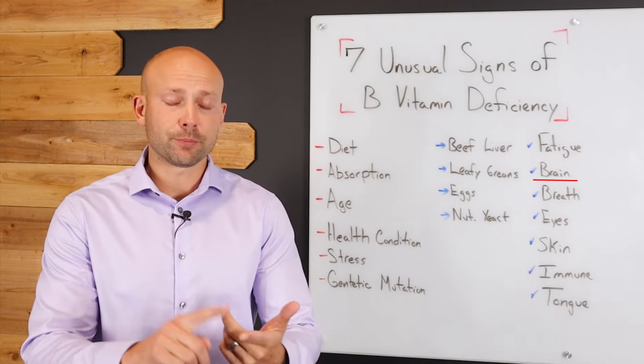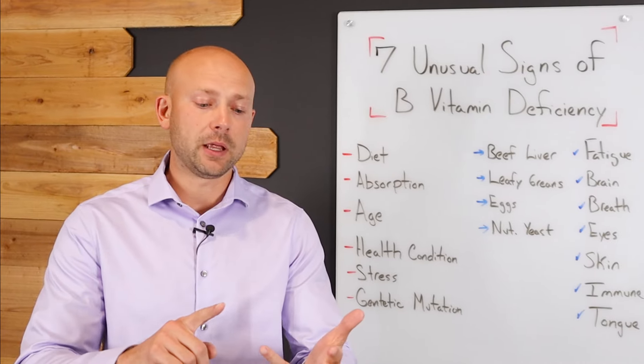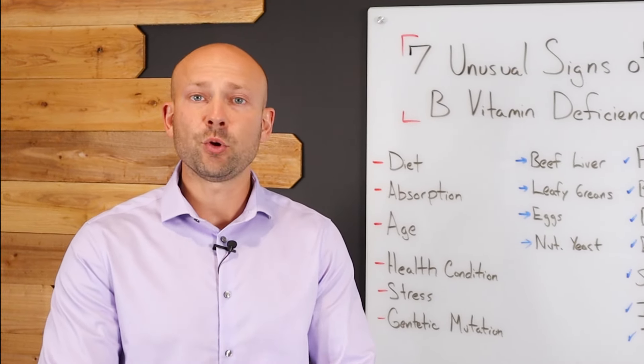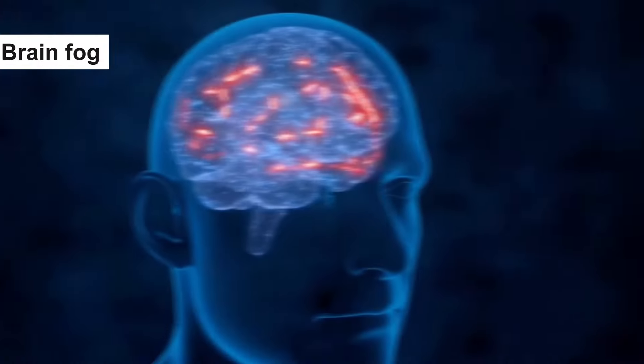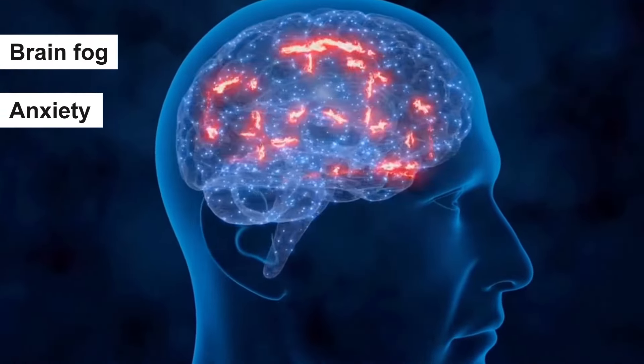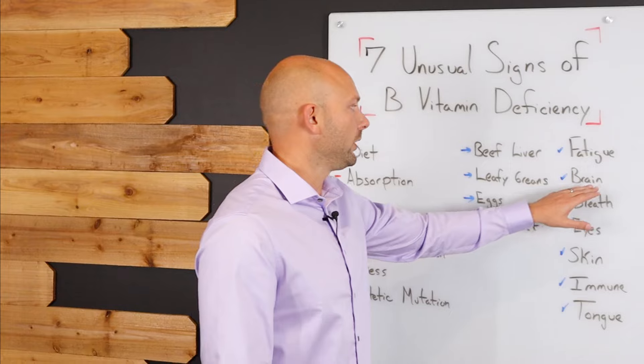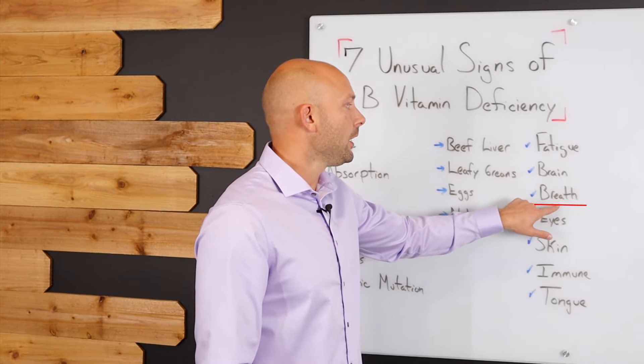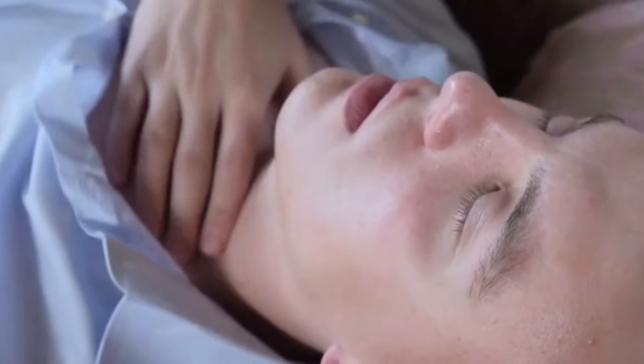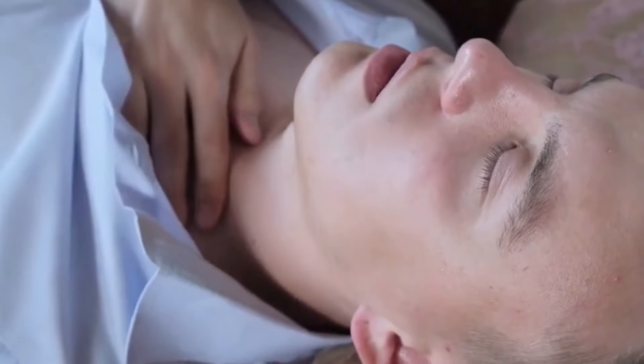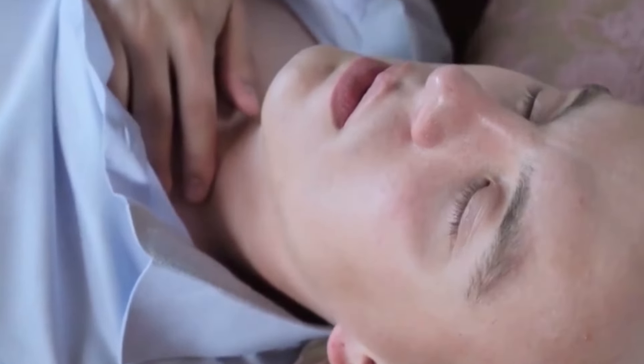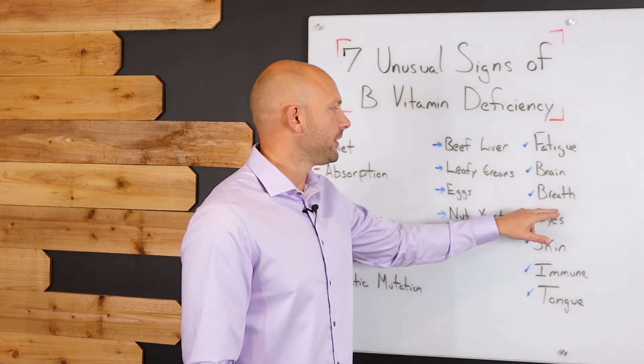Brain issues. This can be depression, this can be anxiety, this can be memory issues. A lot of people who have B vitamin deficiencies can have dementia-like symptoms, just brain fog, anxiety, irritability, you name it. So really going to have a big impact on your brain. Breathlessness. So if you have shortness of breath or you just feel like you can't catch a breath, it doesn't really make sense why it happens, you want to be thinking of a B vitamin deficiency.